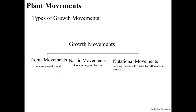There are three basic types of growth movements. The first is the tropic movement, caused by environmental stimuli — various environmental factors affect these kinds of movements. The second type is the nastic movement, which is basically driven by internal environmental conditions or internal timing mechanisms that affect these types of growth movements.